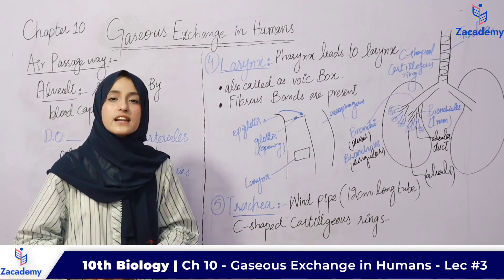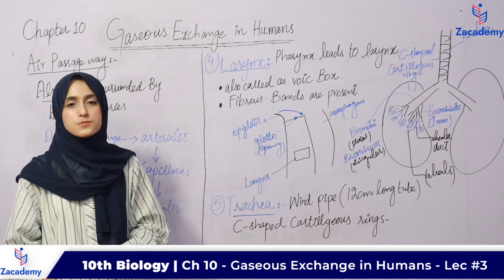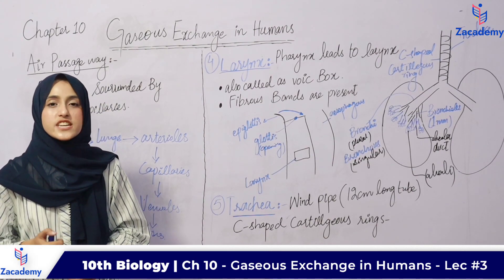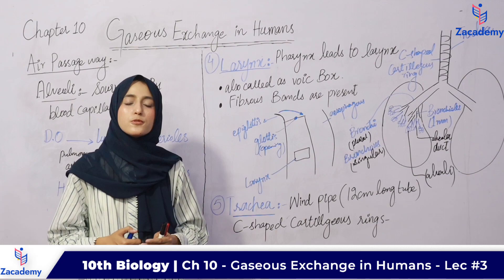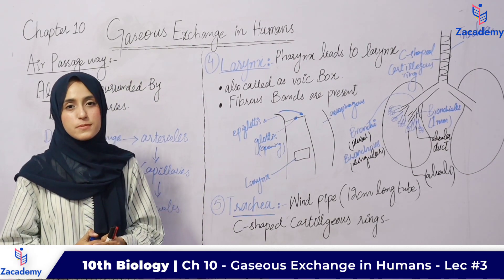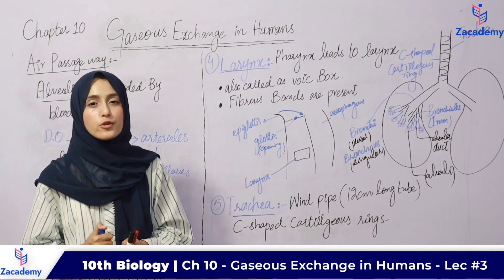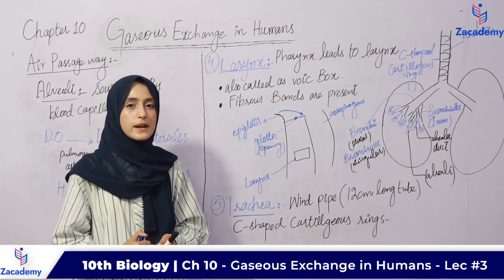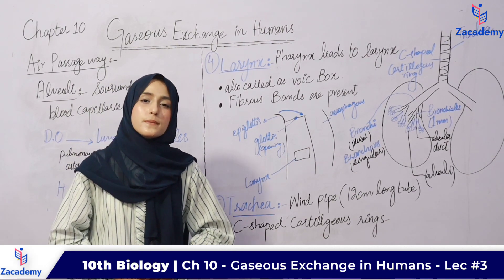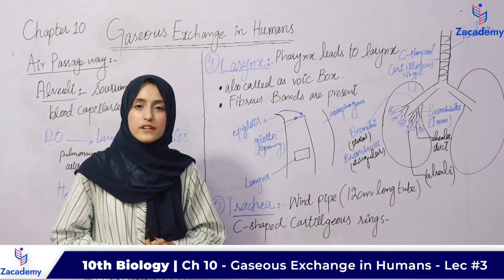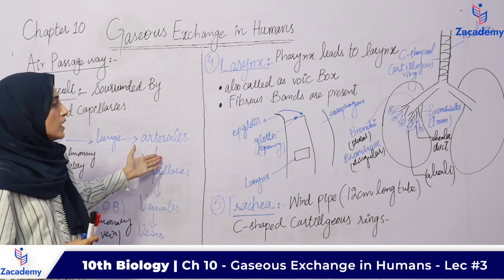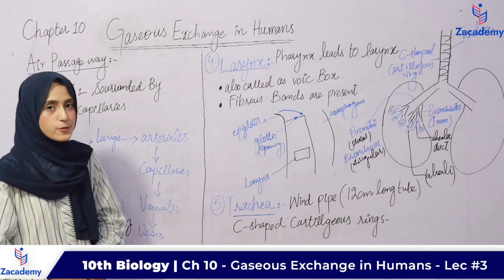Then pharynx — a muscular passageway for both food and air. Then larynx — the voice box. Then trachea — the wind pipe. Then bronchi, then bronchioles, then alveolar duct, and the final destination is alveoli — the basic functional unit of lungs. This completes the air passageway.